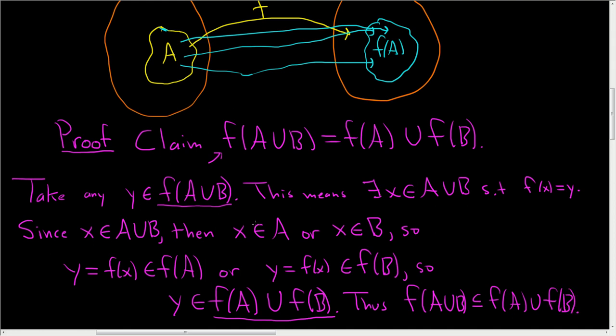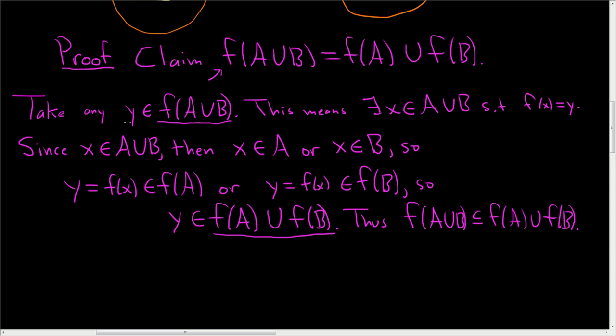So we've shown one inclusion, now we'll show the other. Let me use a different color for the other inclusion. Let's use yellow. So now take any Y in F of A union F of B.